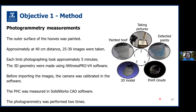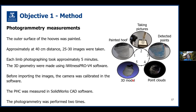For the photogrammetry method, the outer surface of the hooves was painted white and marked with black dots. Approximately 25 to 30 images were taken at 40 centimeter distance using a digital camera from different sides and angles. Each limb photographing took approximately five minutes. The images were imported to iWitnessPort software to recreate the 3D geometry. A centimeter grid paper was placed under the hoof to calibrate the camera, estimating the length of a pixel unit. After iWitness Pro recreated point clouds, PHC was measured in SOLIDWORKS CAD software. The photogrammetry was performed two times without repainting the hooves.